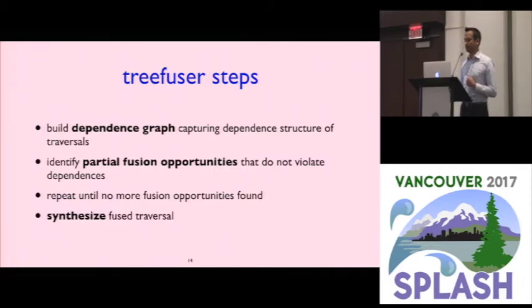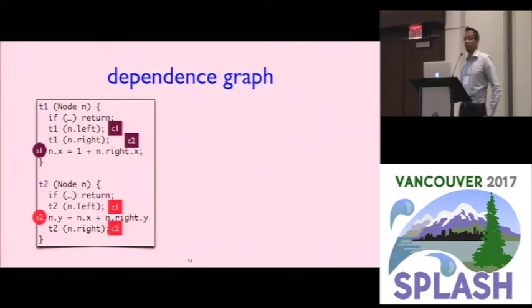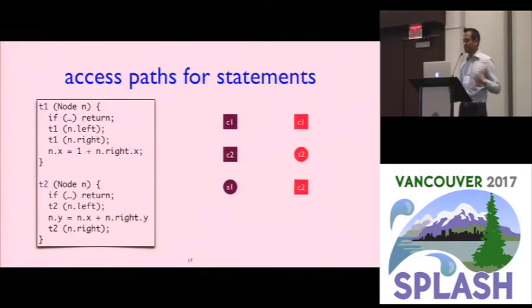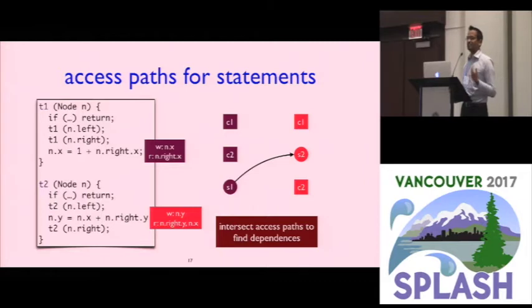Building the dependence graph is going to look familiar if you've looked at any of sort of the dependence analysis for linked data structures work that goes all the way back to the 80s. We're basically going to use access pads to figure out where our dependencies might be. So here's how it works. We build a dependence graph that creates one node for every statement in a traversal and one node for every call in our traversals. So these guys become our dependence graphs. Then, we analyze individual statements in each traversal. For each statement, we collect an access path which basically tells us rooted at a particular node in the tree what fields are we reading and writing. So for example, the statement in traversal 1 writes to n.x and reads from n.write.x. Similarly, the statement in traversal 2 writes to n.y and reads from n.write.y as well as n.y. And then we can just intersect these access paths together to figure out when two statements might have a dependence. So there's a dependence as we know from the update of n.x to the update of n.y.